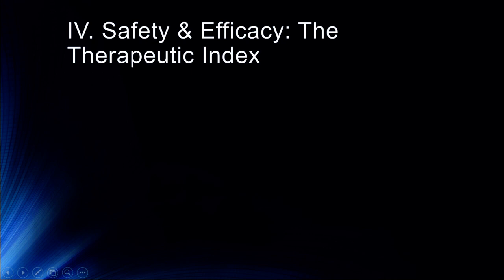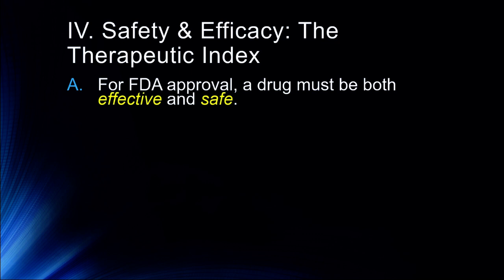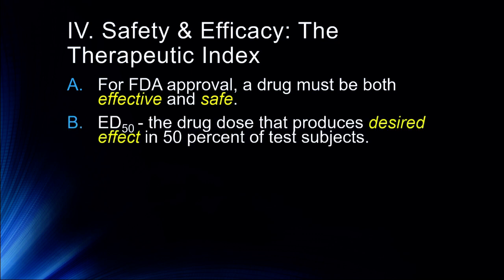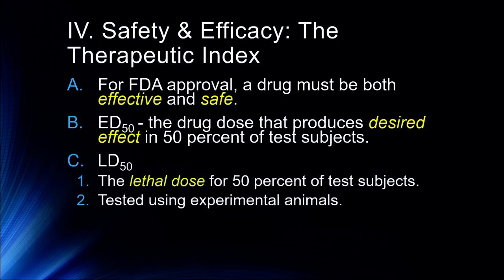The next important thing to talk about is the safety and efficacy of a particular drug, which we measure by what's called the therapeutic index. In order for a drug to receive FDA approval, it has to be both effective and safe. The ED50 is the drug dose that produces the desired effect in 50% of test subjects. The LD50 is the lethal dose for 50% of test subjects. This is tested using experimental animals — we don't test lethal doses on humans, but we can estimate the lethal dose in humans by looking at animal models.